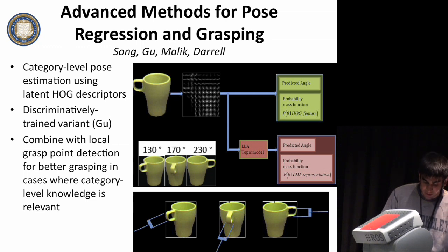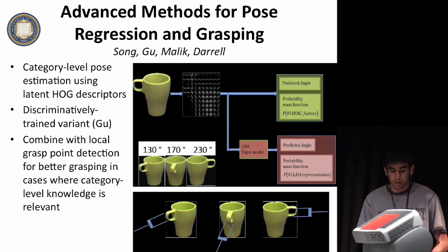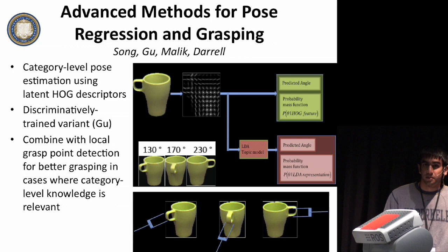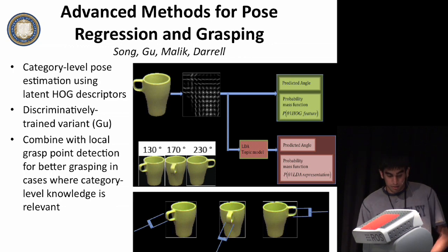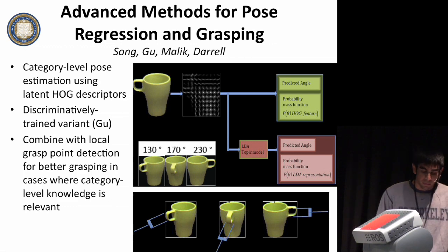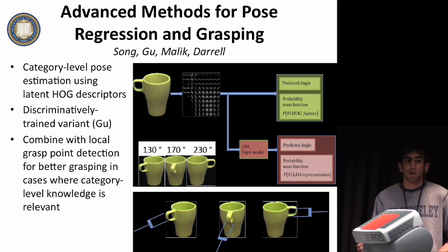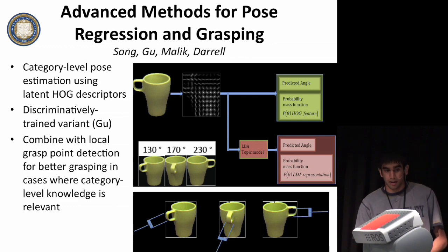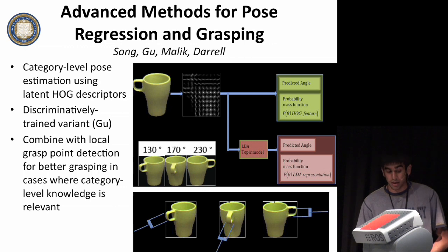For example, you might have an image of a mug where you can't actually see the handle very well, but you can still recognize that it's a mug. If you're going to use local 2D image features, you might not try to grasp it from the handle, but if you know that it's a mug, you can either go and get a better look at the handle or reason about how to grasp the handle anyway.